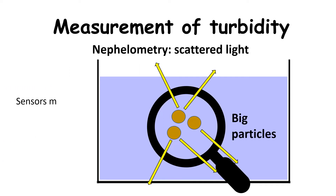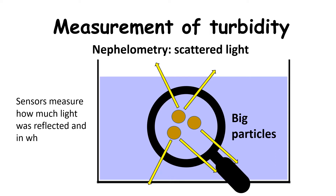Sensors around the wastewater sample can measure how much light was reflected and in which direction it was scattered. This allows determination of the sample turbidity, but also provides information on the amount of total suspended solids and particle sizing.